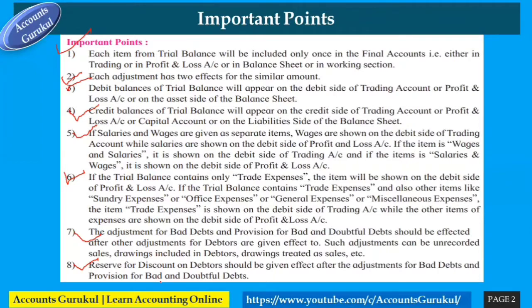Eighth point: reserve for discount on debtors should be given effect only after the adjustments for bad debts and provision for bad and doubtful debts have been made. We will discuss how to handle this when solving practical problems — for example, when an existing provision for doubtful debts is given and we are asked to provide further bad debts provisions.